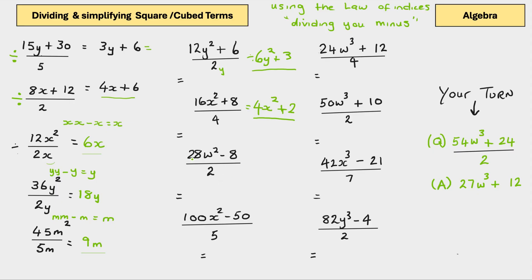28w squared minus 8 divided by 2. 2 divided by 28 is 14. It's attached to a w squared. There's no w at the bottom. 2 divided by 8 equals 4. And that's your answer. And one last one. 100x squared minus 50 divided by 5. 5 divided by 100, we all know that. That's 20. Is there an x at the bottom? No. So, keep that as it is. 5 divided by 50 is 10.